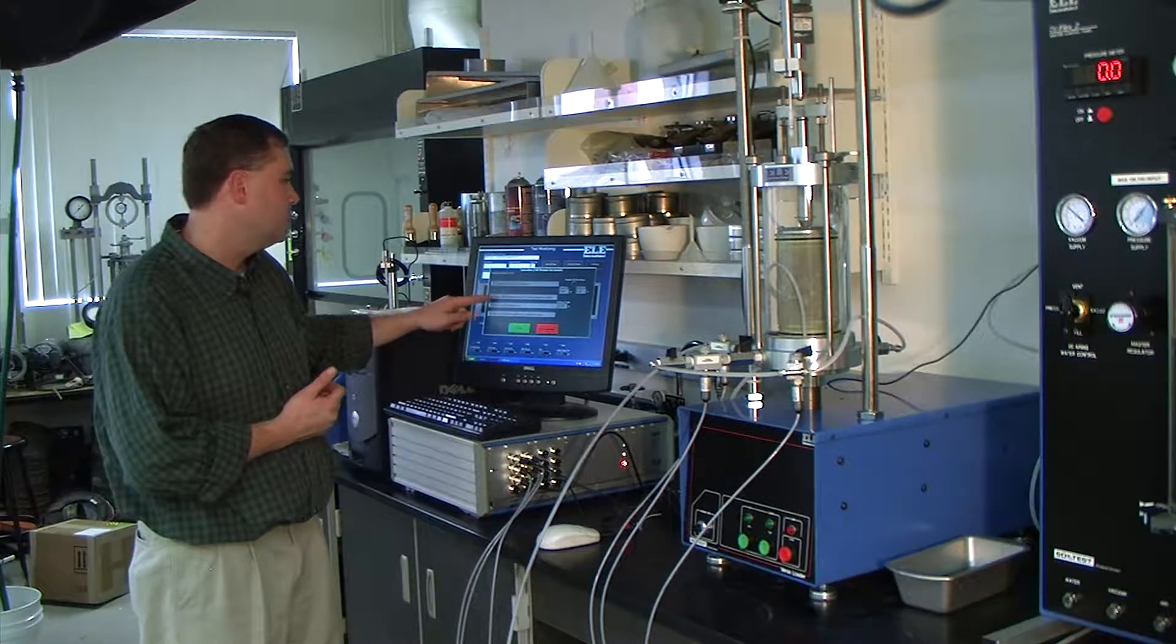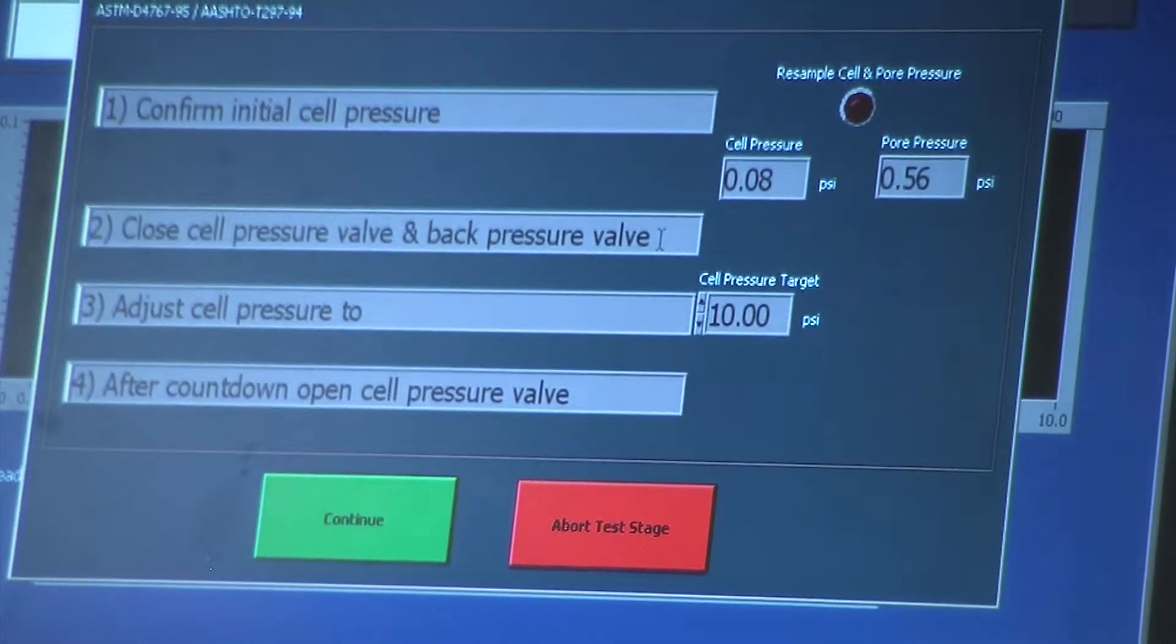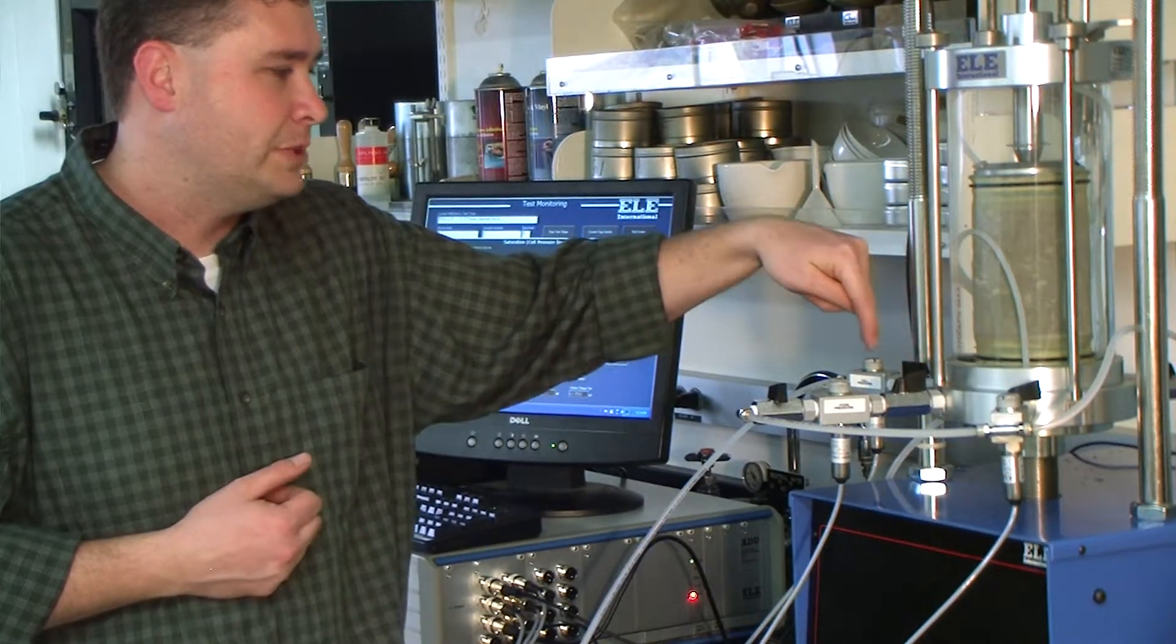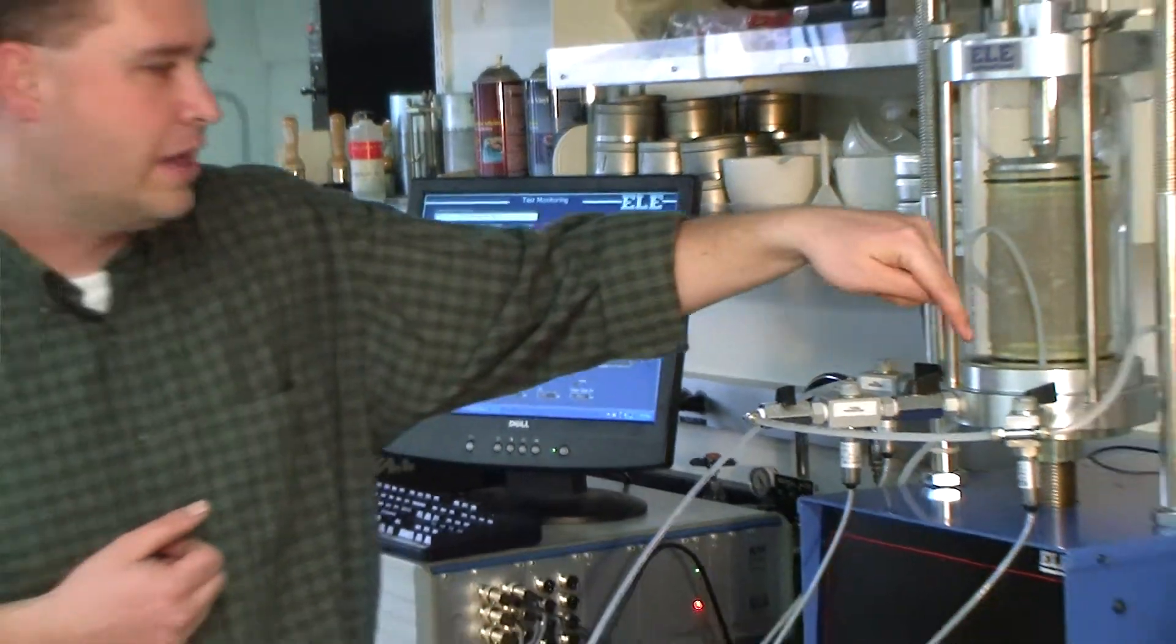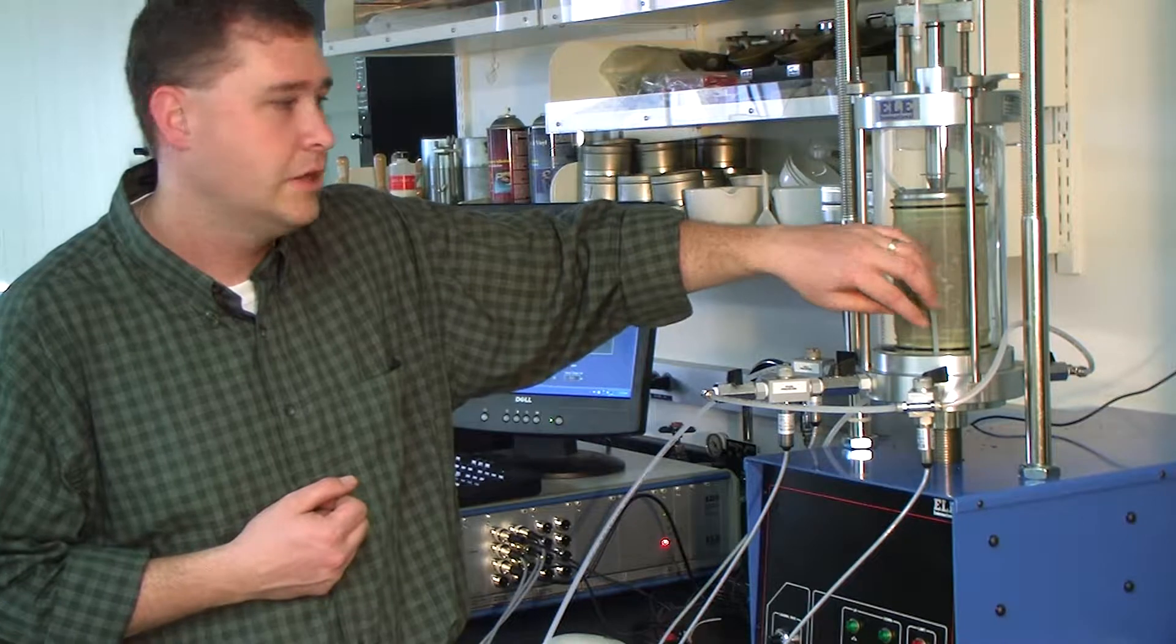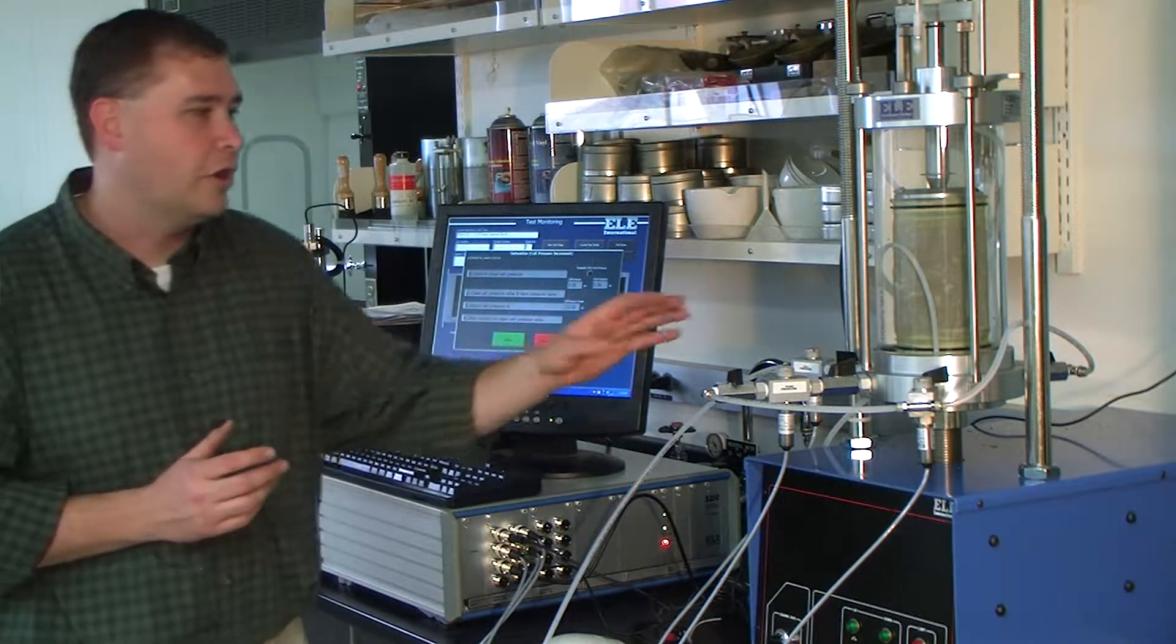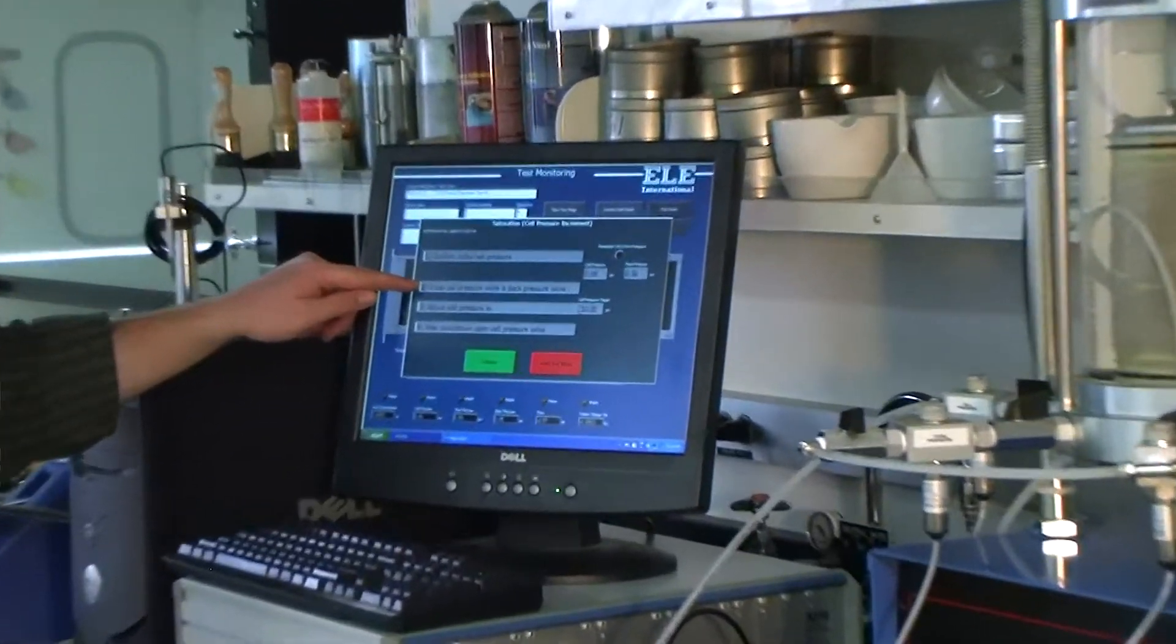The next step is step two, closed Cell Pressure Valve and Back Pressure Valve. When you first start, they're already closed, but I'll show you where they are on the cell. The Cell Pressure Valve is here, between the Cell Pressure Transducer and the cell itself. And the Back Pressure Valve is here, between the Back Pressure Transducer and the cell. Step two is already taken care of for us.